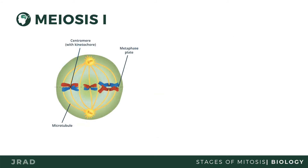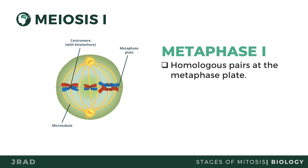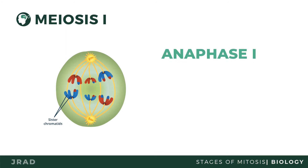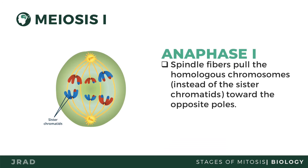In metaphase 1, homologous chromosomes are oriented away from each other at the opposite poles, and the spindle fibers are attached to the kinetochores. Just like anaphase of mitosis, spindle fibers pull the chromosomes towards the opposite poles of the cell. However, in anaphase 1, the homologous chromosomes are pulled to the opposite poles instead of sister chromatids. Towards the end of anaphase 1, each pole has the same number of chromosomes.